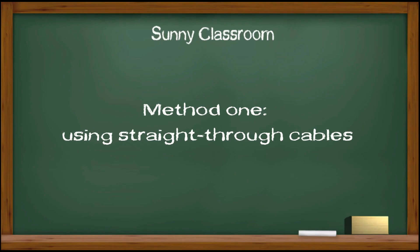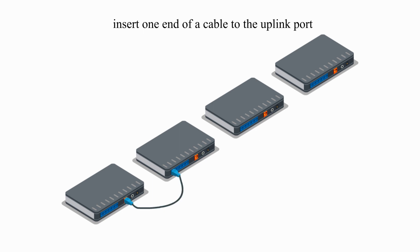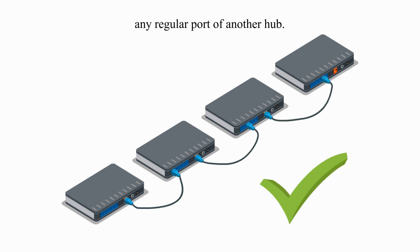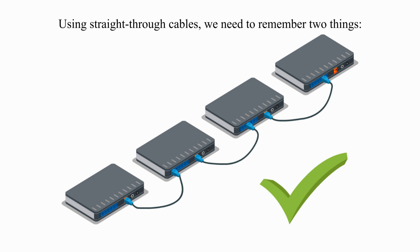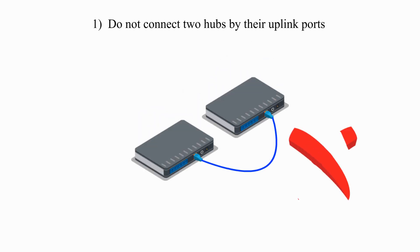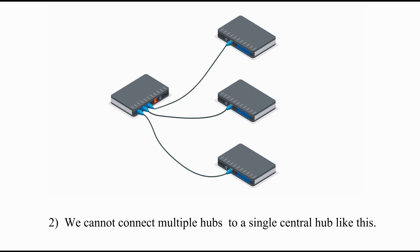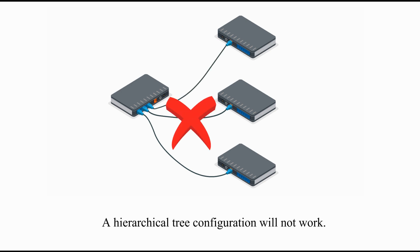First method: we use straight-through cables to connect hubs. Uplink ports are useful in this situation. To connect two hubs or multiple hubs, insert one end of a cable into the uplink port on one hub, and the other cable end into any regular port of another hub. We call this method daisy chain configuration. Using straight-through cables, we need to remember two things: one, do not connect two hubs by their uplink ports; two, we cannot connect multiple hubs to a single central hub like this — a hierarchical tree configuration will not work.